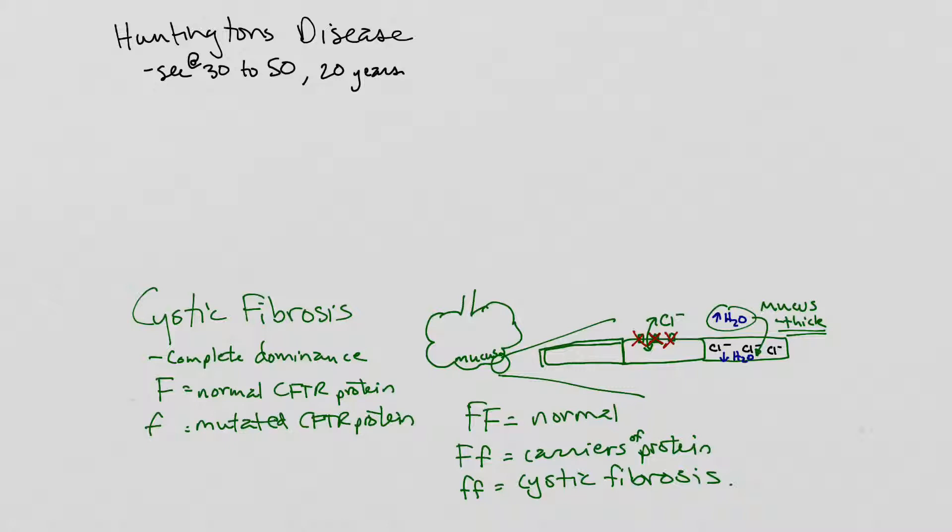Now, this one's really interesting because, while it works on complete dominance, it's a little bizarre because it's the big H—it's the dominant allele that causes the disease. And so, the opposite of cystic fibrosis, it's the dominant allele that causes the disease. And so, lowercase people don't have it. People that have the recessive characteristics.